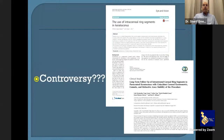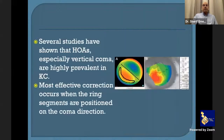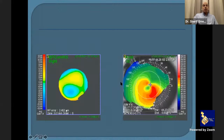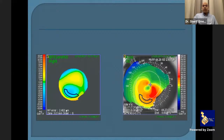Several studies have shown that high-order aberrations, especially vertical coma, are highly prevalent in keratoconus, and the most effective correction occurs when ring segments are positioned along the coma axis. The incision should be placed on the coma aberration axis rather than the steep topographic axis — this is why the patient was not happy with the result.